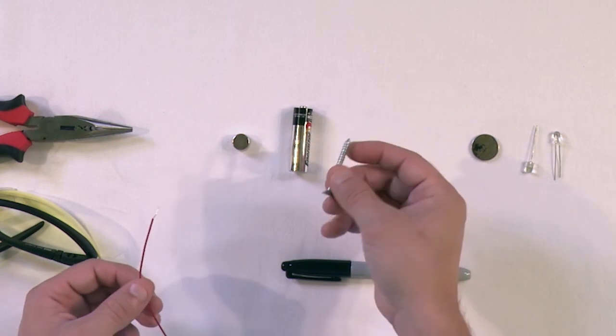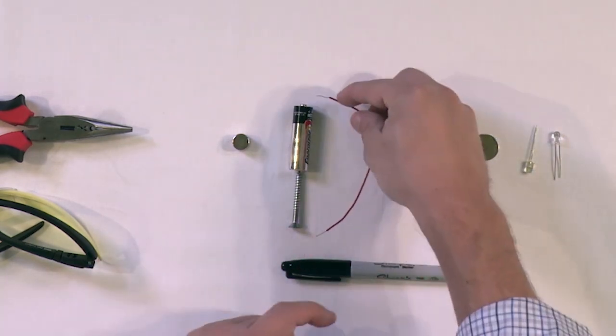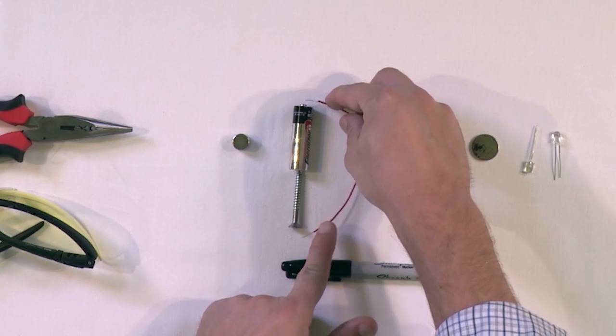All we need to get started is a AA battery, a screw, a piece of wire, and a rare earth magnet.